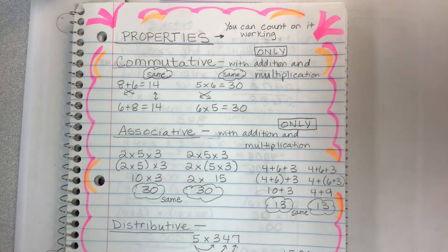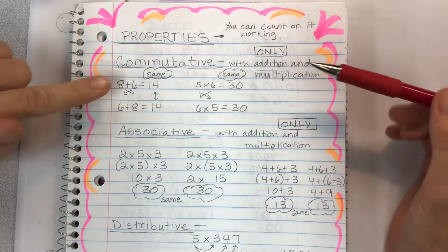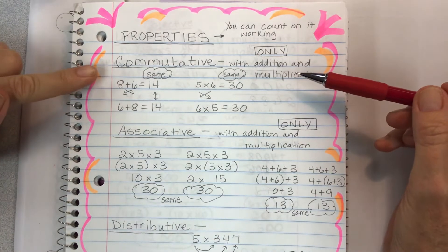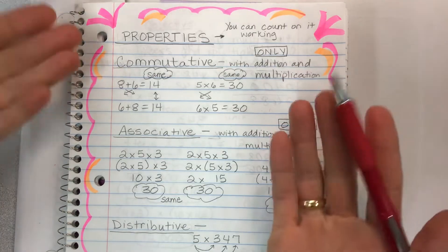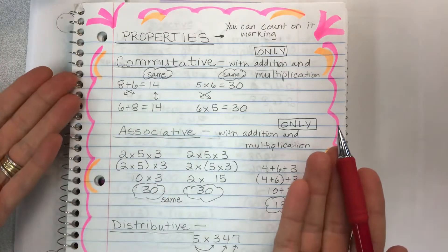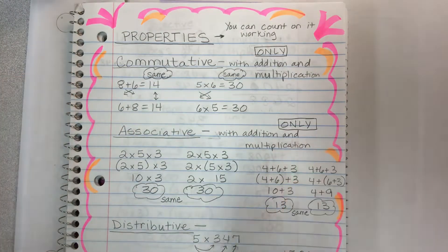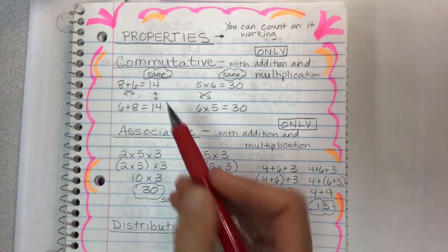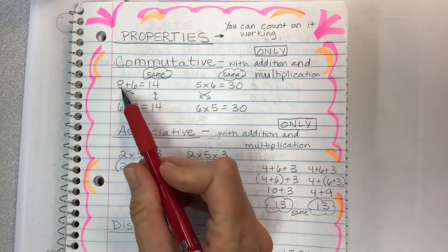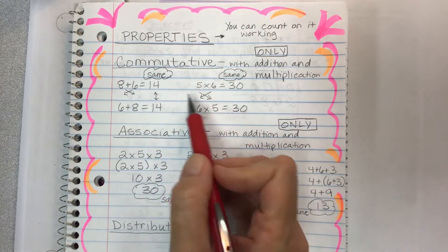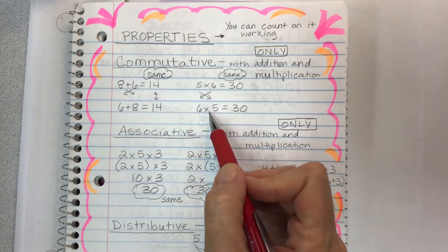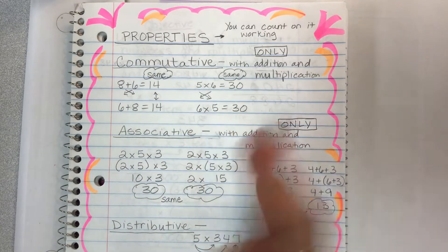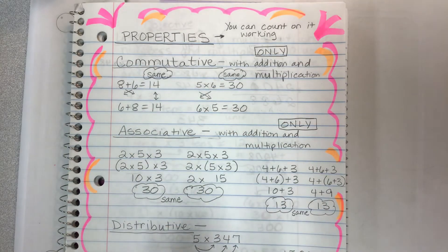So we've worked with a couple of different properties. The one we used mostly in module 1 was the commutative property, meaning I could switch the places of my factors and I will get the same product no matter what. You can also use it with addition — it only works with addition and multiplication though, so we can't just switch the order in division and subtraction.